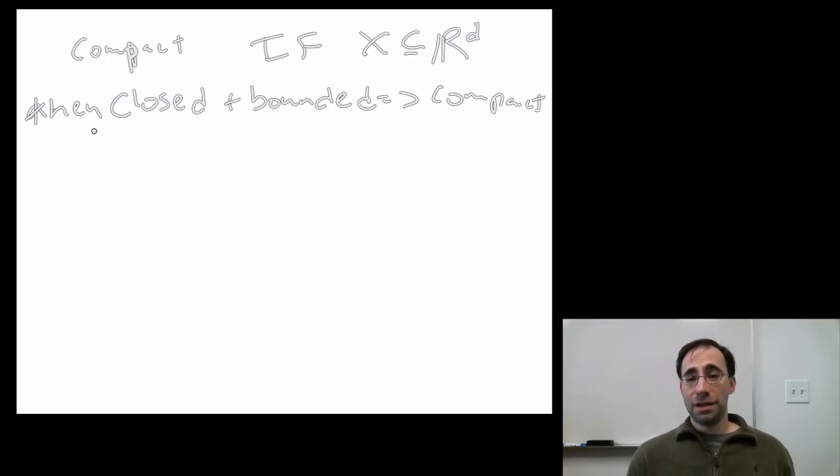If X is a subset of some real numbers, some space, then closed and bounded implies compact. Compact intuitively means what it means in English. The space is, in some sense, compact. It's closed, so it has all its limit points, all its end points, and it's bounded, so it doesn't go on forever. Closed and bounded, compact spaces, compact sets, are much more likely to admit maxima and minima than ones that are open.